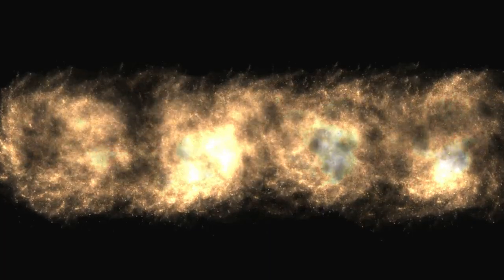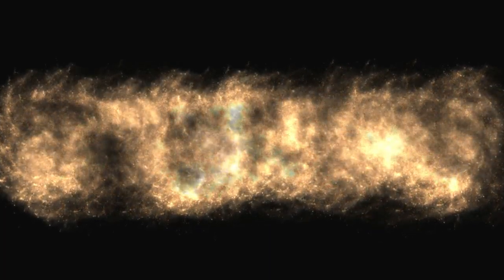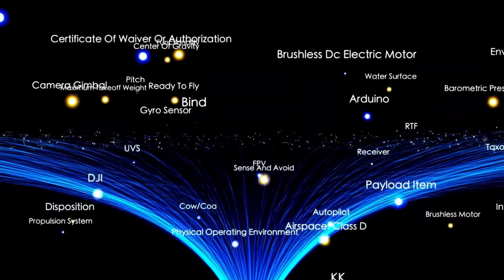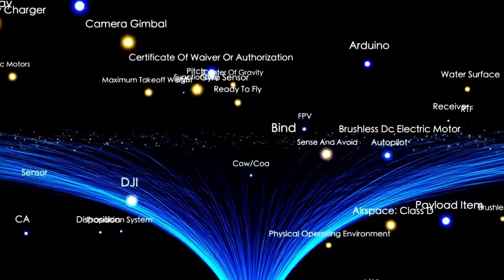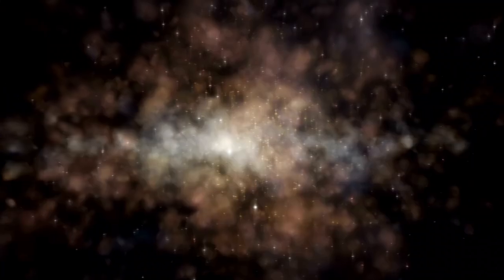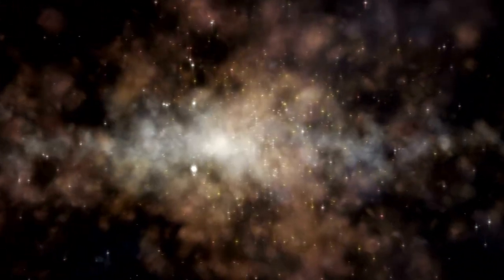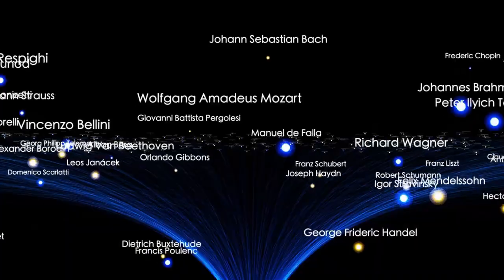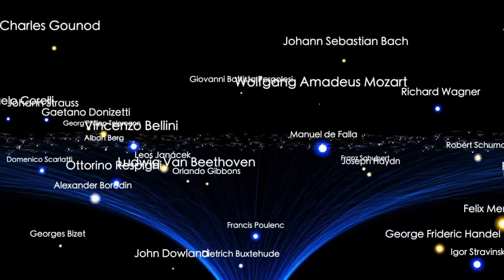Scientists estimate that the diameter of the observable universe is about 93 billion light years. That may seem surprising when compared to the estimated age of the universe, which is around 13.8 billion years. One might wonder how the observable universe can be larger than the age of the universe in light years. The answer lies in the fact that the universe has been expanding ever since the Big Bang.